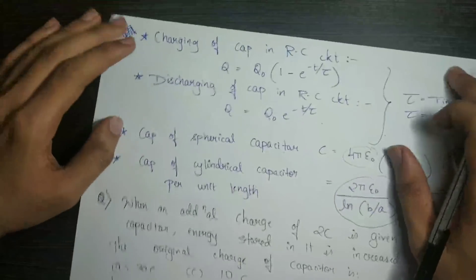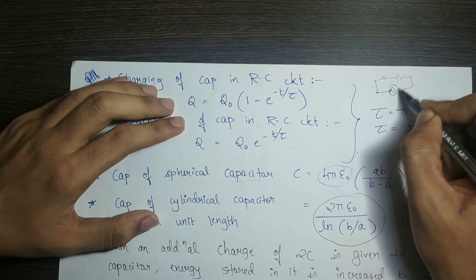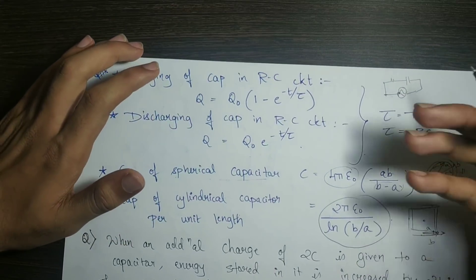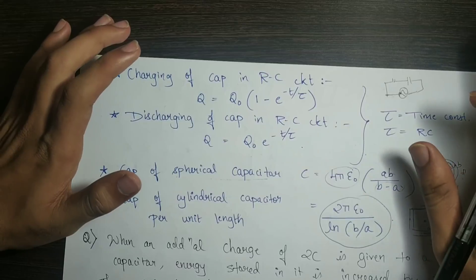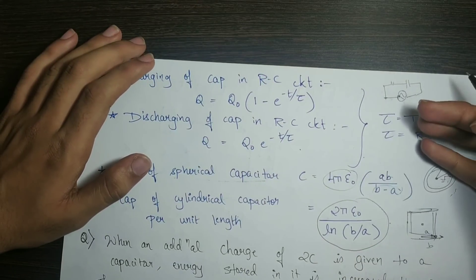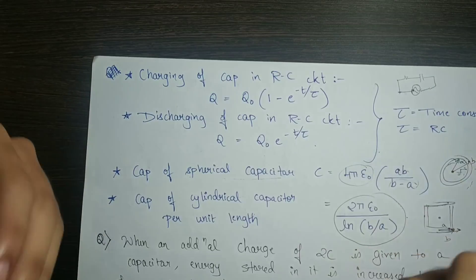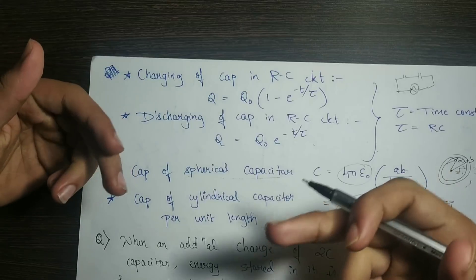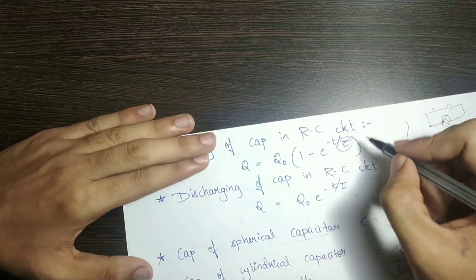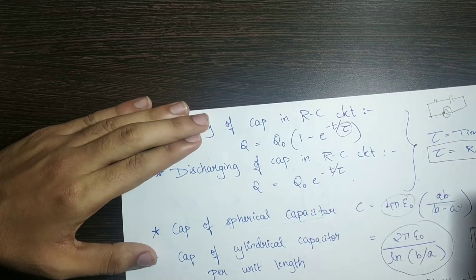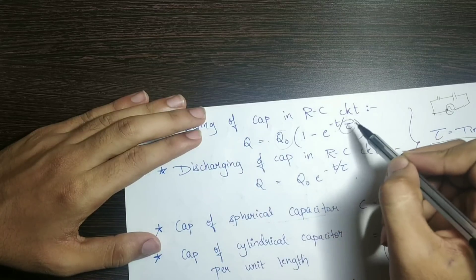Next is the charging of capacitors in RC circuits. An RC circuit has a resistor and capacitor with an AC or DC source. DC charges the capacitor, but it takes some time. The time constant τ equals RC, and the charge at time t is Q equals Q₀ times (1 minus e^(−t/τ)).